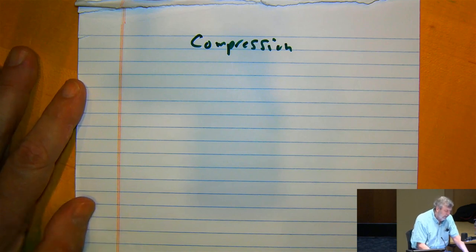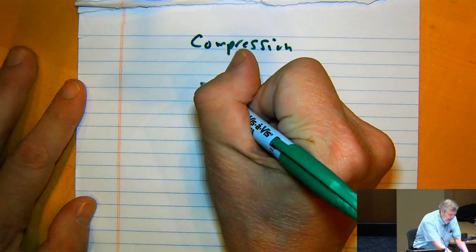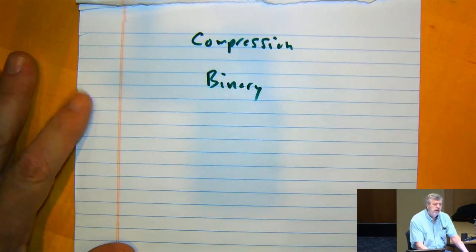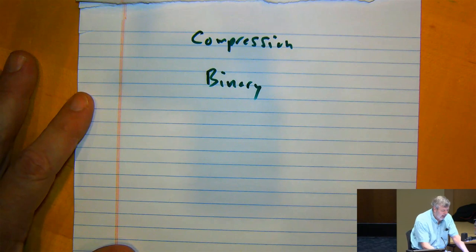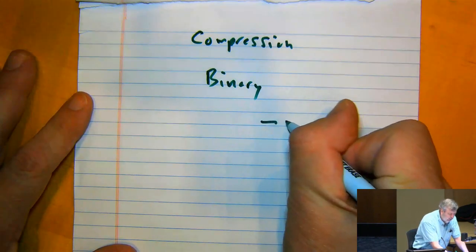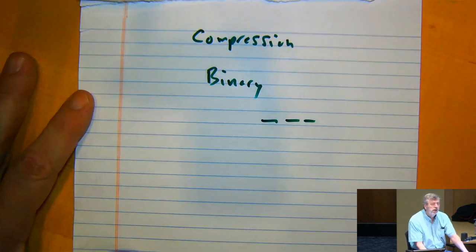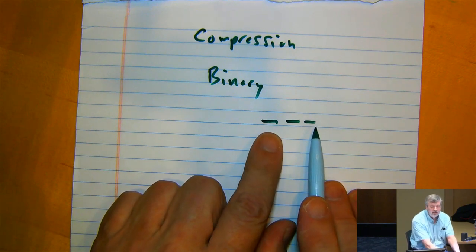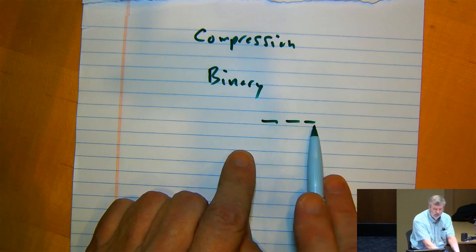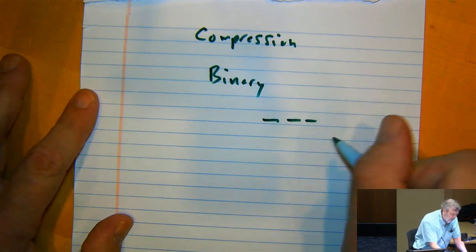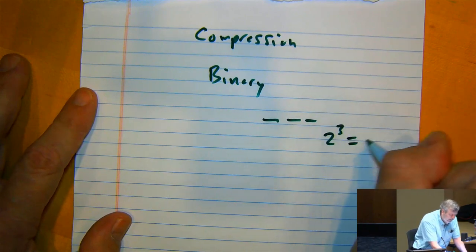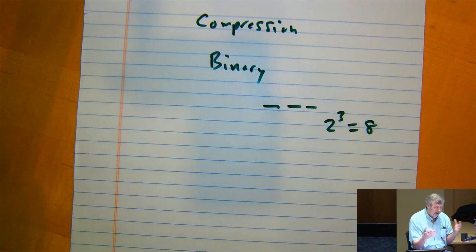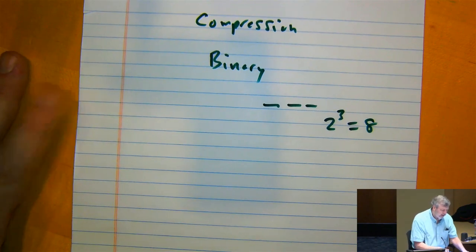So, compression. This involves trying to understand how things are stored on a computer. Suppose that you had three binary bits available to you — how many different things could you encode? Each bit can be a zero or a one, so there are three bits with two possibilities each, giving two cubed or eight possible sequences. There's a kind of theory of codes and sequences.